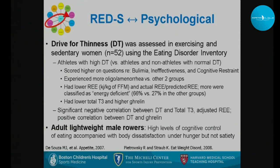Another study looked at adult lightweight male rowers. The REDS model has more studies in women, but there are increasingly more studies in men. In adult lightweight male rowers, high levels of cognitive control of eating were accompanied by body dissatisfaction under hunger but not satiety. We are now studying more lightweight men and track and field athletes as well.